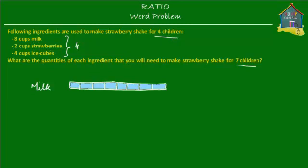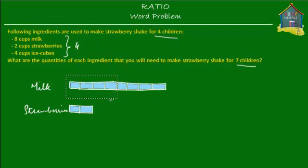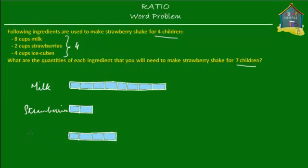Now let's also represent two cups of strawberries. Since each unit here is equal to one cup, I simply copy two of these units because that would be two cups of strawberries. And I need four cups of ice cubes as well, so I copy four cups from here. So here are my four cups of ice cubes.